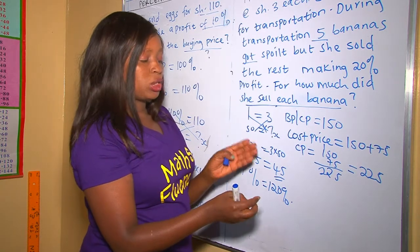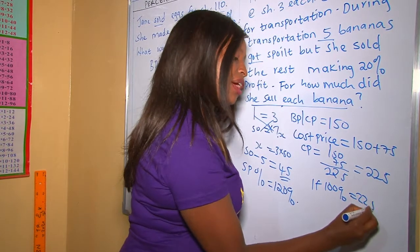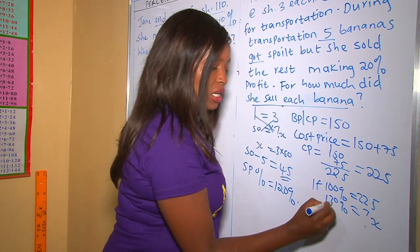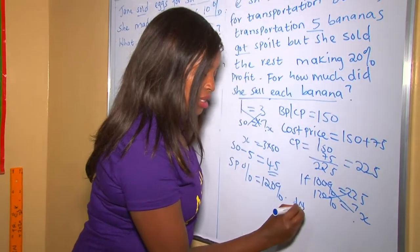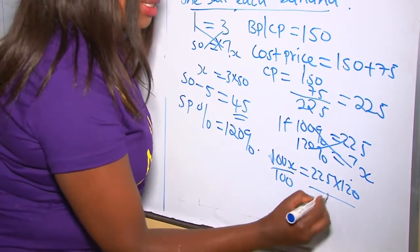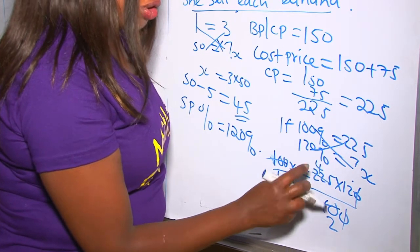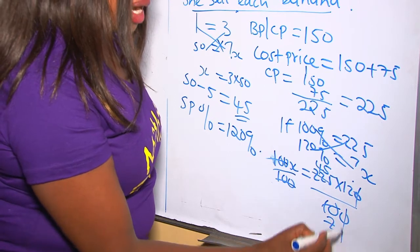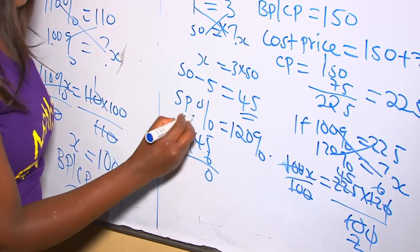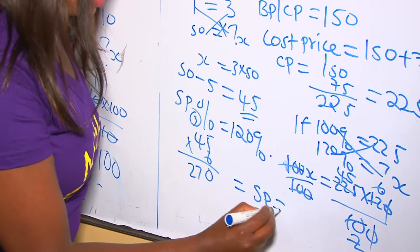Our buying price or cost price is 225 shillings. Therefore, if 100% equals 225, what does 120% — the selling price — equal? We cross-multiply: 100X equals 225 times 120. Dividing both sides by 100, and simplifying — 225 times 120 divided by 100 — we work through the multiplication: 45 times 6 equals 270. The total selling price is 270 shillings.